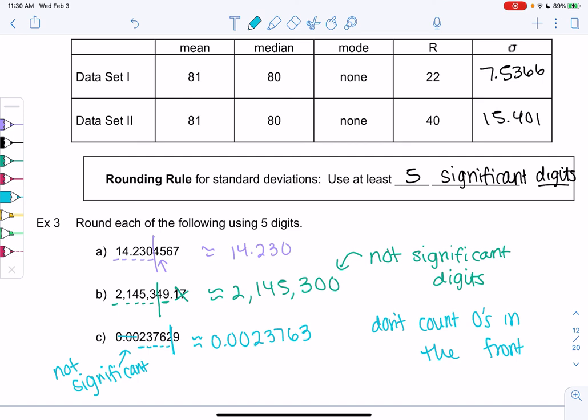So decimal places don't matter. Digits matter for standard deviation.